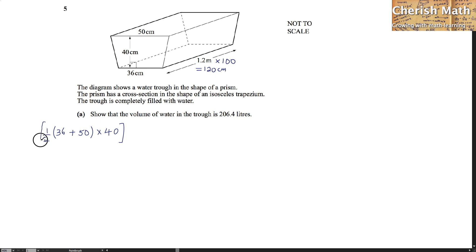This is the area of the trapezium. Now we are using the area of the trapezium multiplied by 120 as the length of the trough. And the answer that we are getting here by using a calculator is in fact 206,400 centimeter cubed.